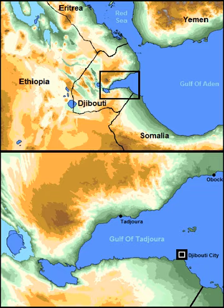The Gulf has many fishing grounds, extensive coral reefs, and abundant pearl oysters. Most of its coastline is the territory of Djibouti, except for a short stretch on the southern shore which is part of the territory of Somalia. The Gulf's other marine habitats include sea grass beds, salt pans, and mangroves.